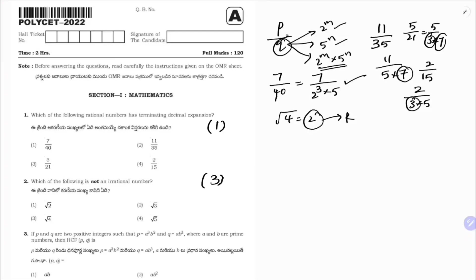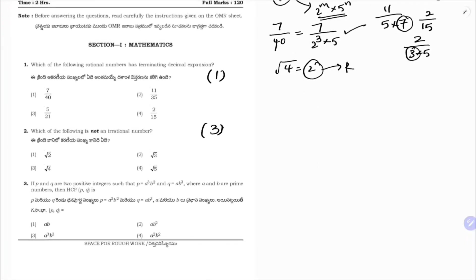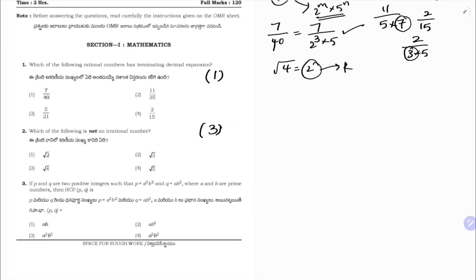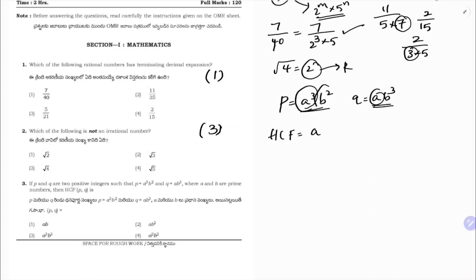Third question: if p and q are two positive integers such that p = a³b² and q = ab³, where a and b are prime numbers, find the HCF. For HCF: we have a³ and a, so the common is only a. We have b² and b³, so common is b². Therefore HCF is ab². Correct option is 2.